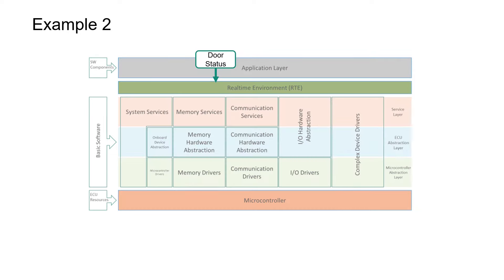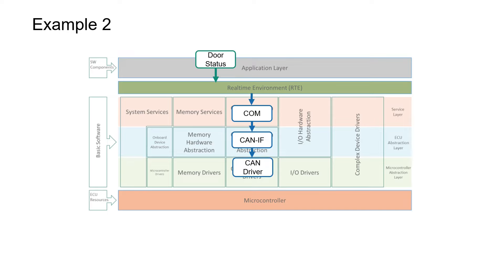Let's take another example: the door control unit wants to broadcast the status of the door via CAN to other ECUs in the car. First, the door status software component in the application requests the RTE to send a CAN signal. This request is routed to the Communication Layer of BSW. The Communication Service Layer routes the frame through CANIF to the CAN driver. The CAN driver writes the CAN frame into the hardware buffer, which converts it to an electrical signal that is then transmitted through the CAN bus to the other ECUs.